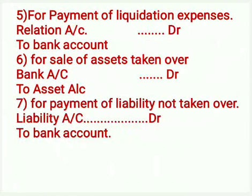Entry number 12: for discount to debenture holder or preference shareholder — Debenture Holder Account Debit or Preference Shareholder Account Debit to Realization Account. Entry number 13: for payment to debenture holder — Debenture Holder Account Debit to Bank or Debenture in Purchasing Company Account. Entry number 14: for payment to preference shareholder — Preference Shareholder Account Debit to Bank or Share in Purchasing Company Account.